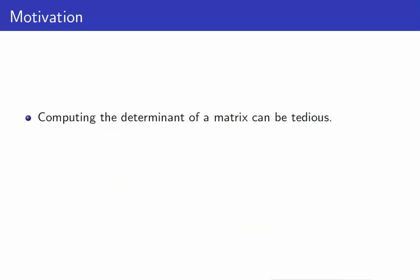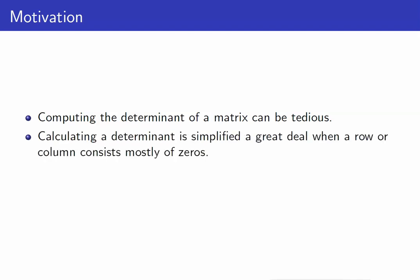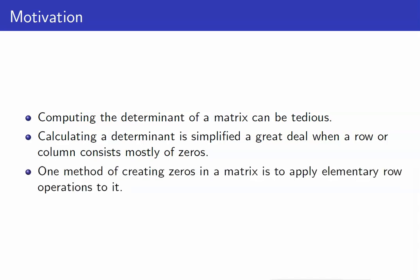As we have seen, computing the determinant of a matrix can really be tedious. However, if the matrix contains a lot of zeros, just like in the case of a triangular matrix, calculating the determinant will be very easy. So what we want to do is create zeros in a matrix so that the determinant would be easier to compute, and to do that we will apply elementary row operations.